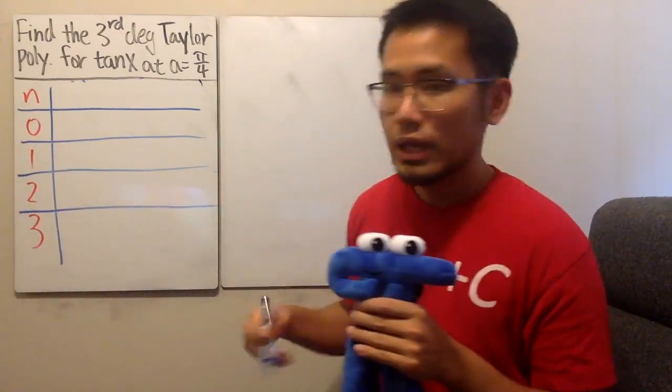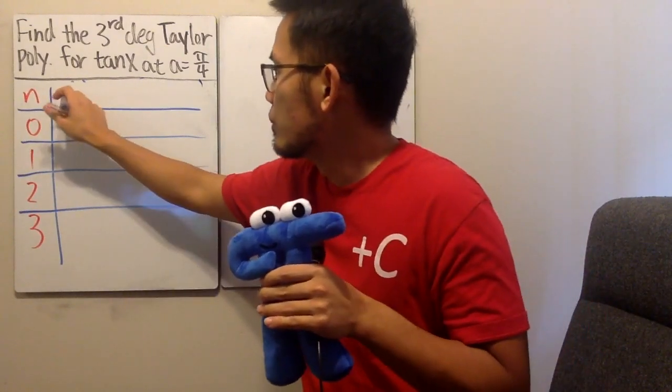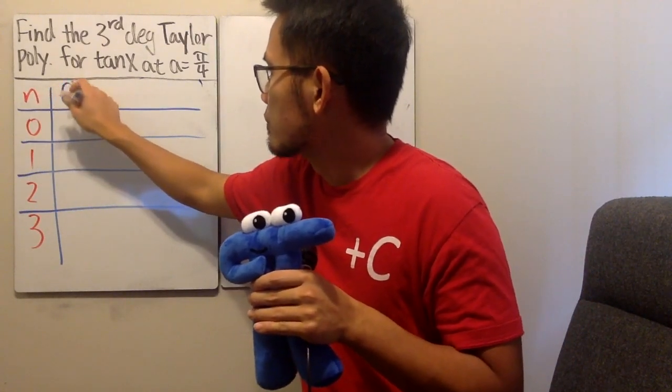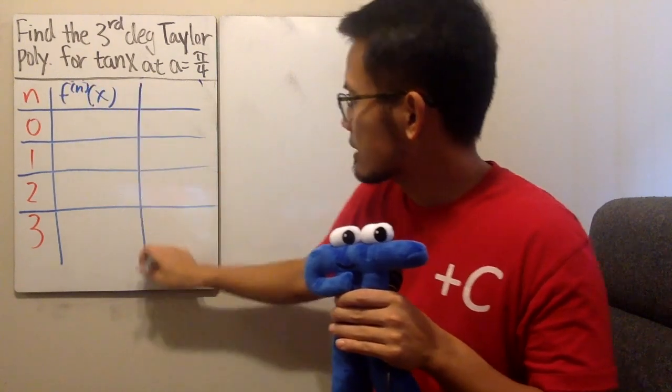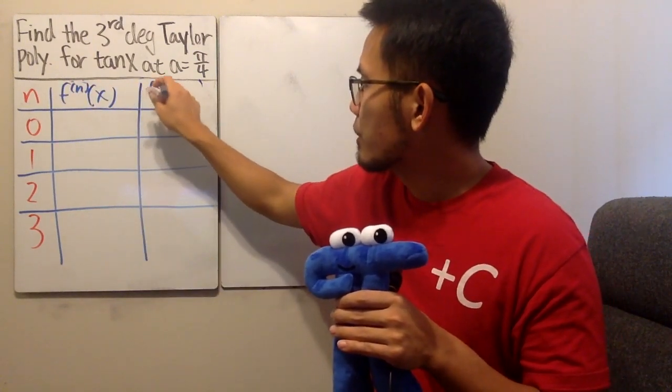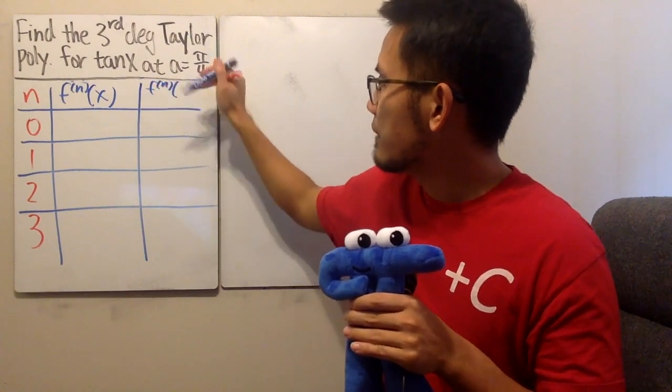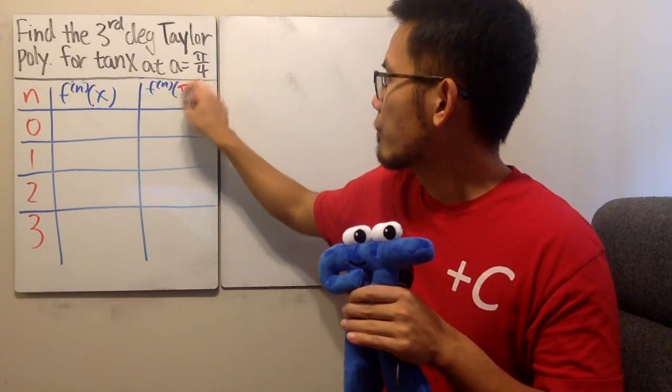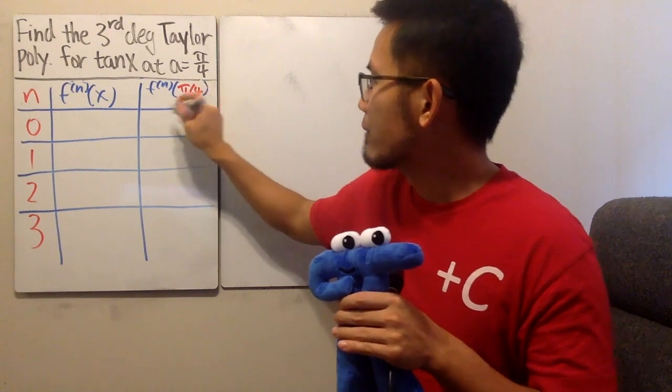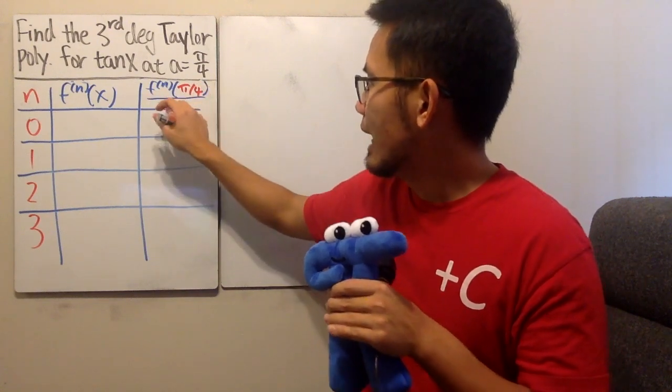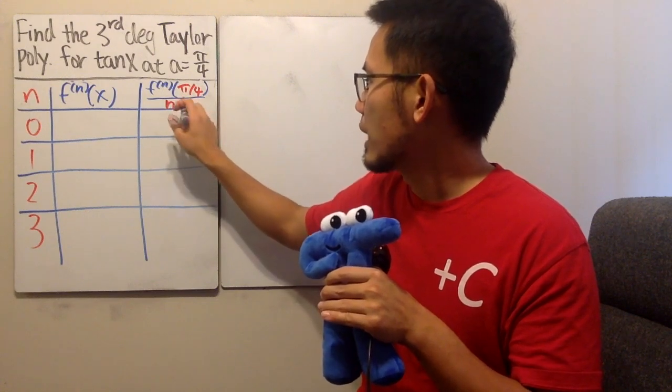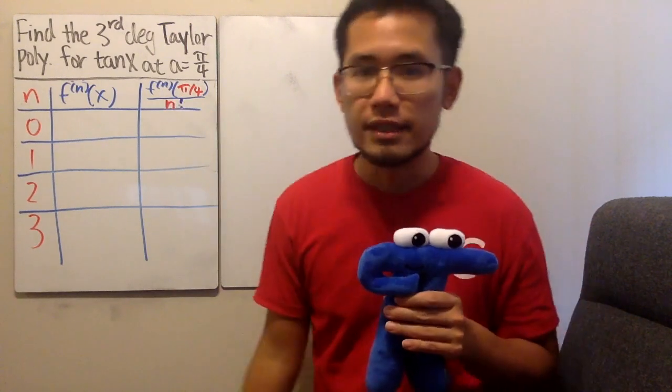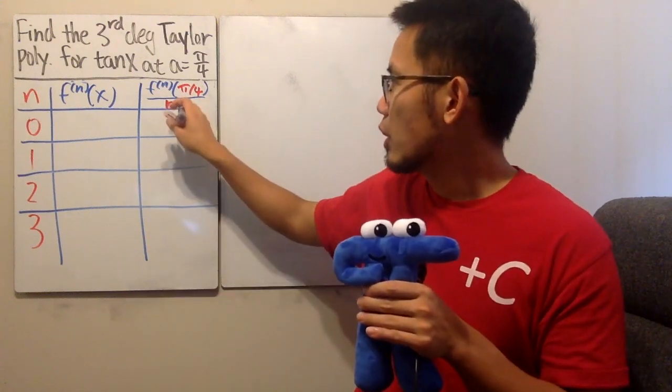The challenge for this is we have to know how to differentiate tangent really well. Let's write down f(n) like this with x, and then let's put down the Taylor formula, f(n), and the a value here is pi over 4, and we have to divide it by n factorial. So that's what we have. This is the setup.